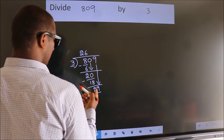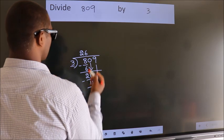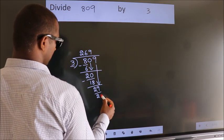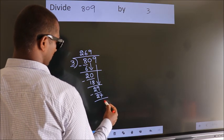So, 29. A number close to 29 in the 3 table is 3 times 9, which is 27. Now we subtract and get 2.